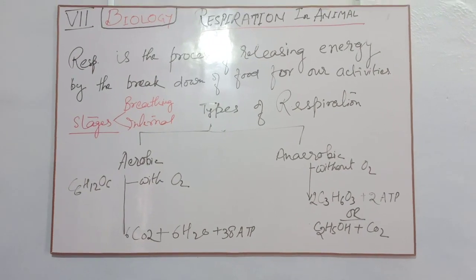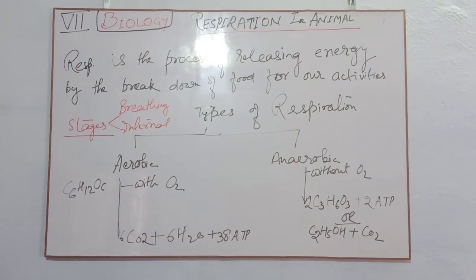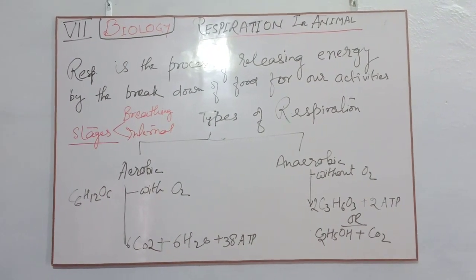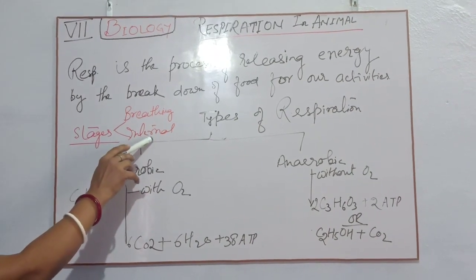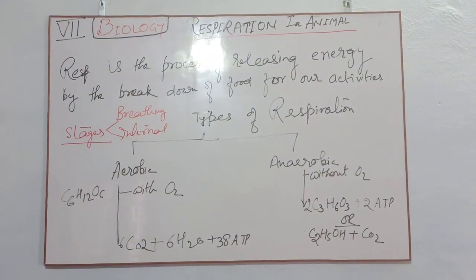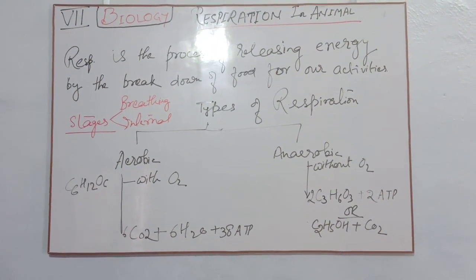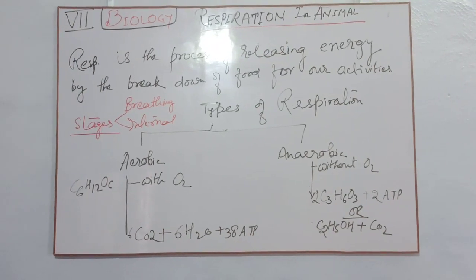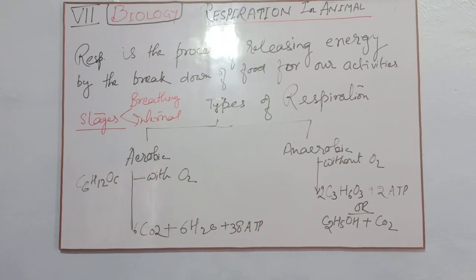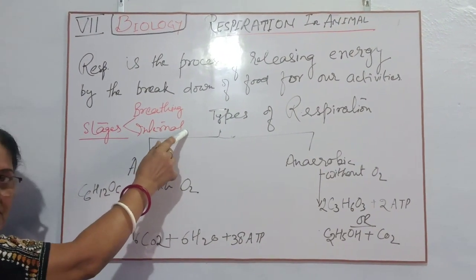Now the second stage is internal respiration. As the name suggests, internal means this happens inside the cell. Internal respiration is the reaction of glucose with oxygen in the presence of either the cytoplasm or the mitochondria.